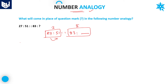The first number analogy question has numbers 27 and 51. If you observe carefully, 27 can be written as 5 squared plus 2. And 51 is nothing but 7 squared plus 2. So the first group gives us: 5 squared plus 2, and 7 squared plus 2. Now apply the similar logic for the second group of elements.